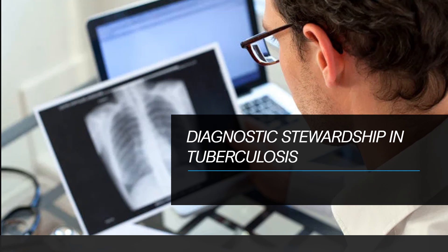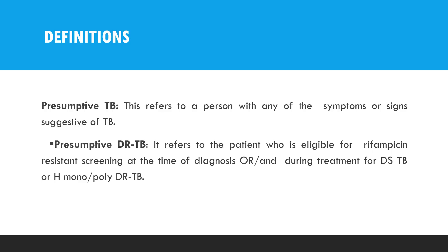Hello everyone. Let's see how to do diagnosis towards presumptive tuberculosis. Let us understand presumptive TB and presumptive drug-resistant tuberculosis. Presumptive tuberculosis refers to a person with any signs and symptoms suggestive of tuberculosis, whereas presumptive drug-resistant TB refers to a patient who is eligible for rifampicin-resistant screening at the time of diagnosis or during treatment for drug-sensitive TB, or isoniazid mono or poly drug-resistant tuberculosis.